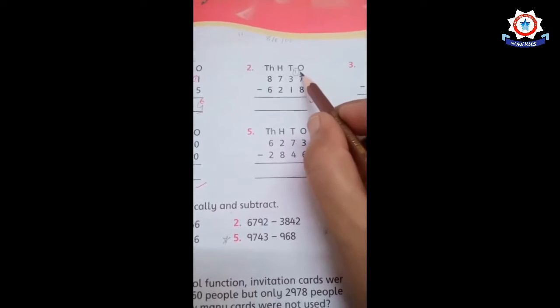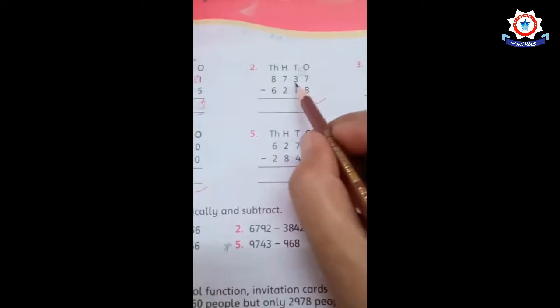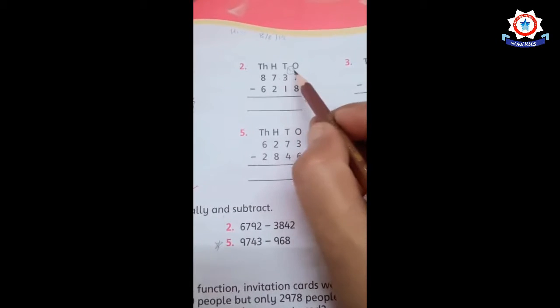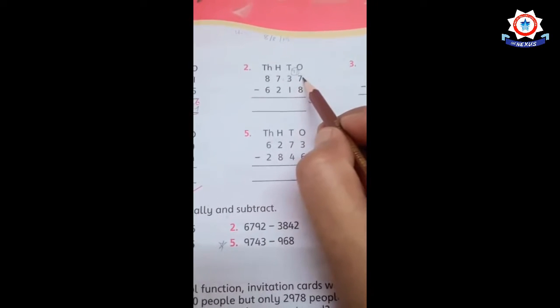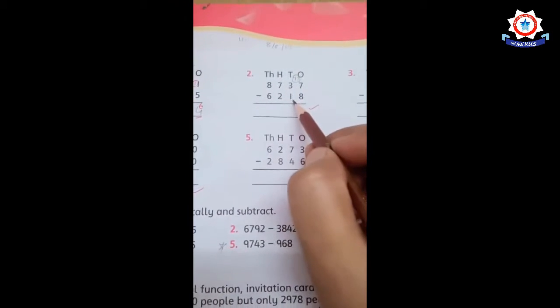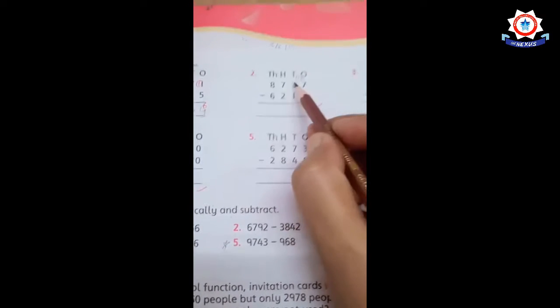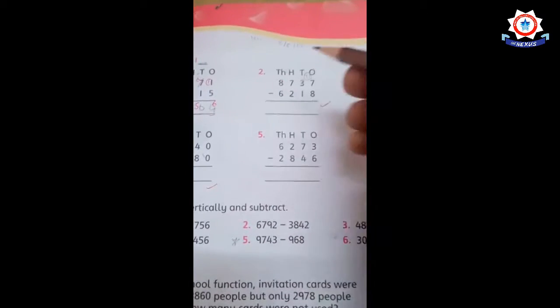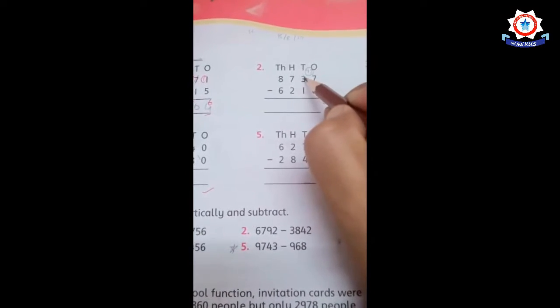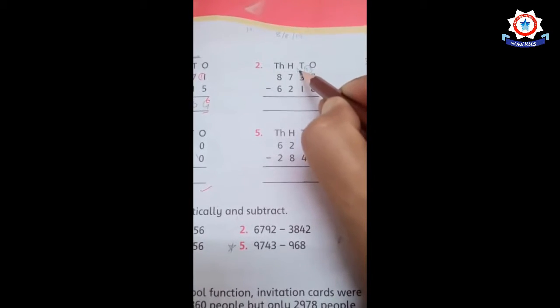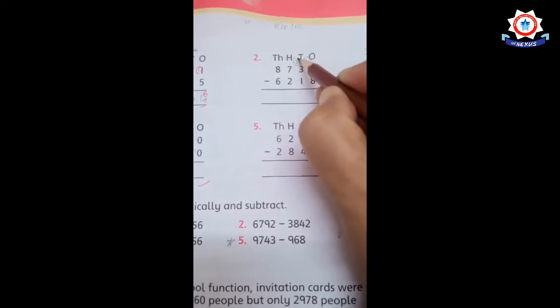The number one has been borrowed. It has to be minus. So when you borrow, three becomes two. So you can write it in a small circle. You can write it in a circle so you can write it in the right way.